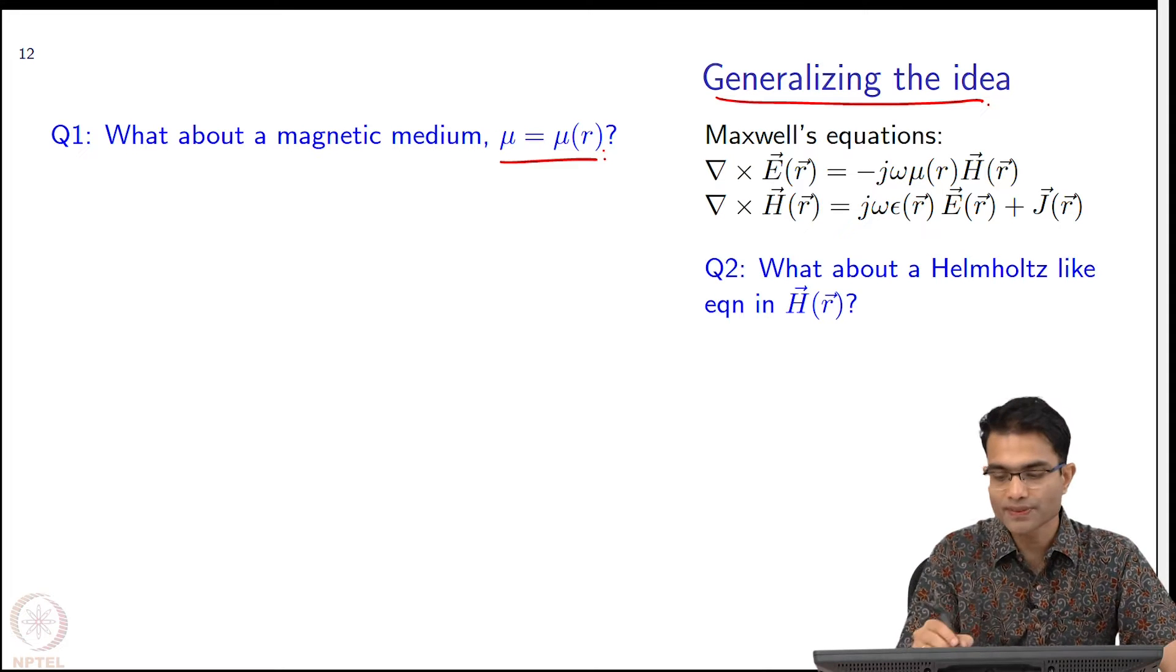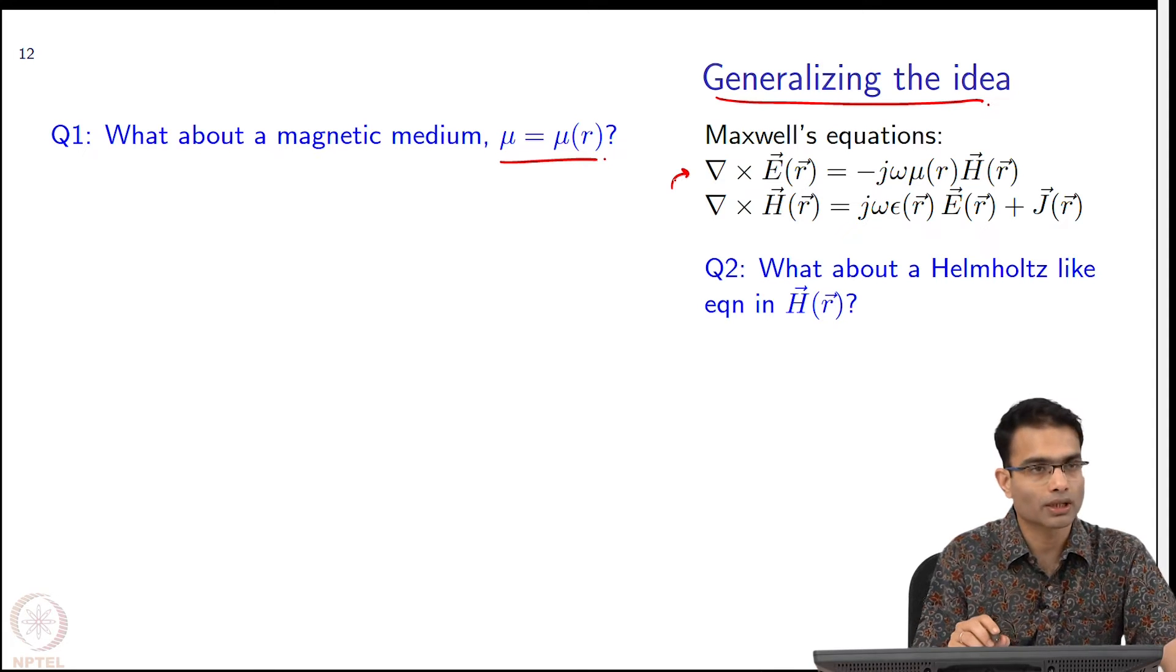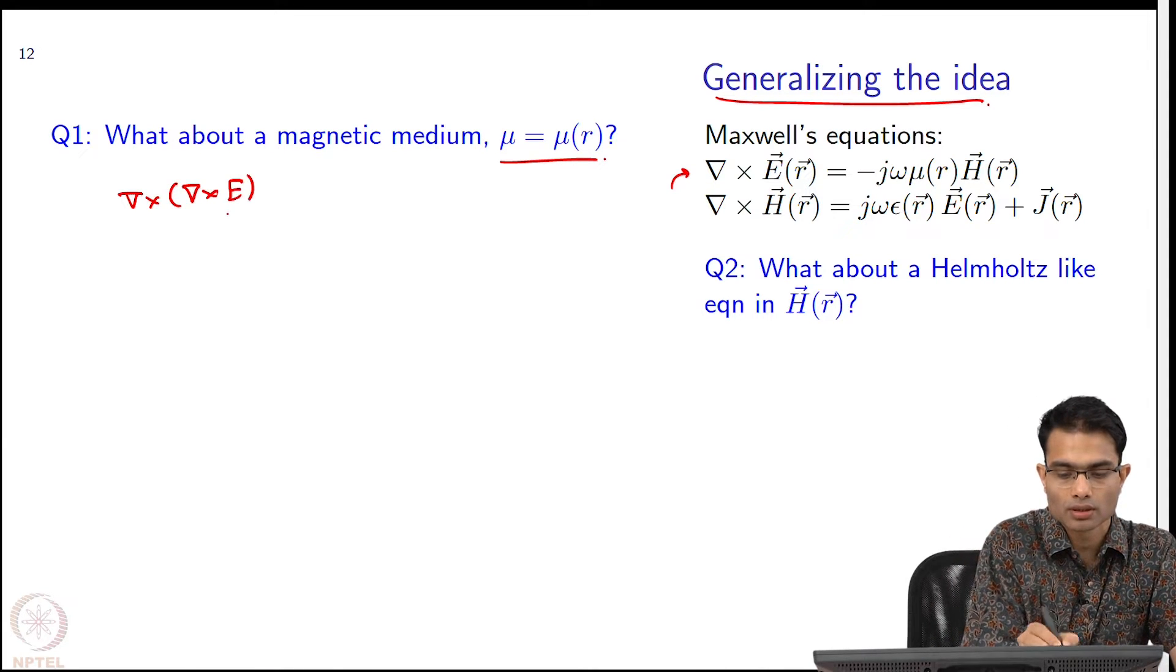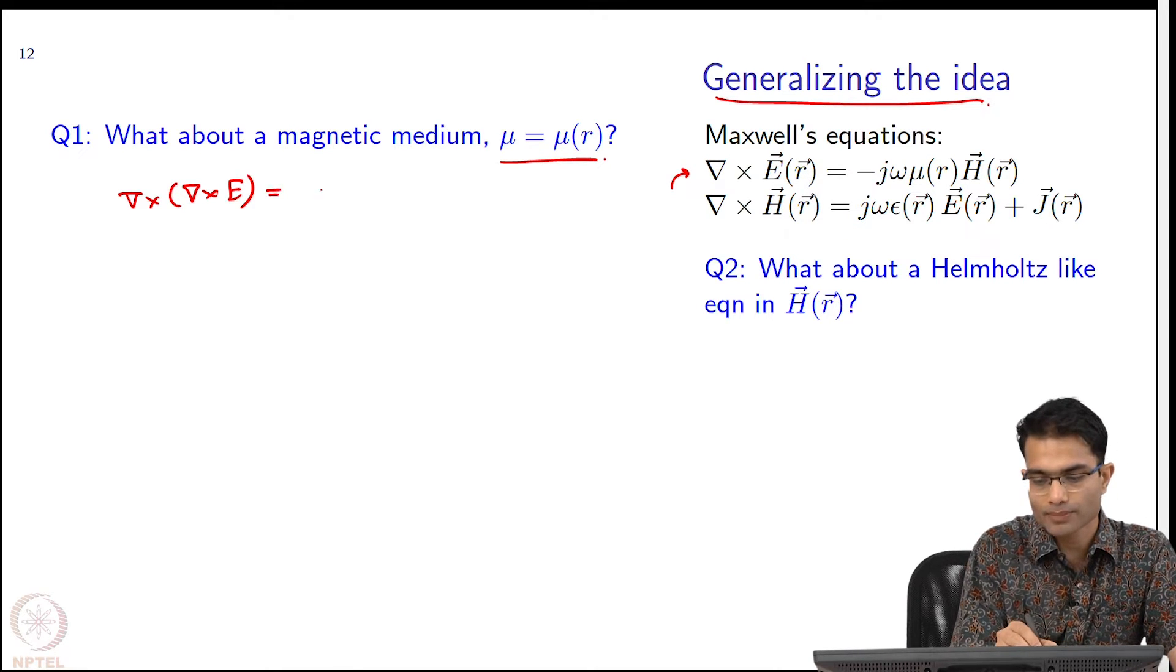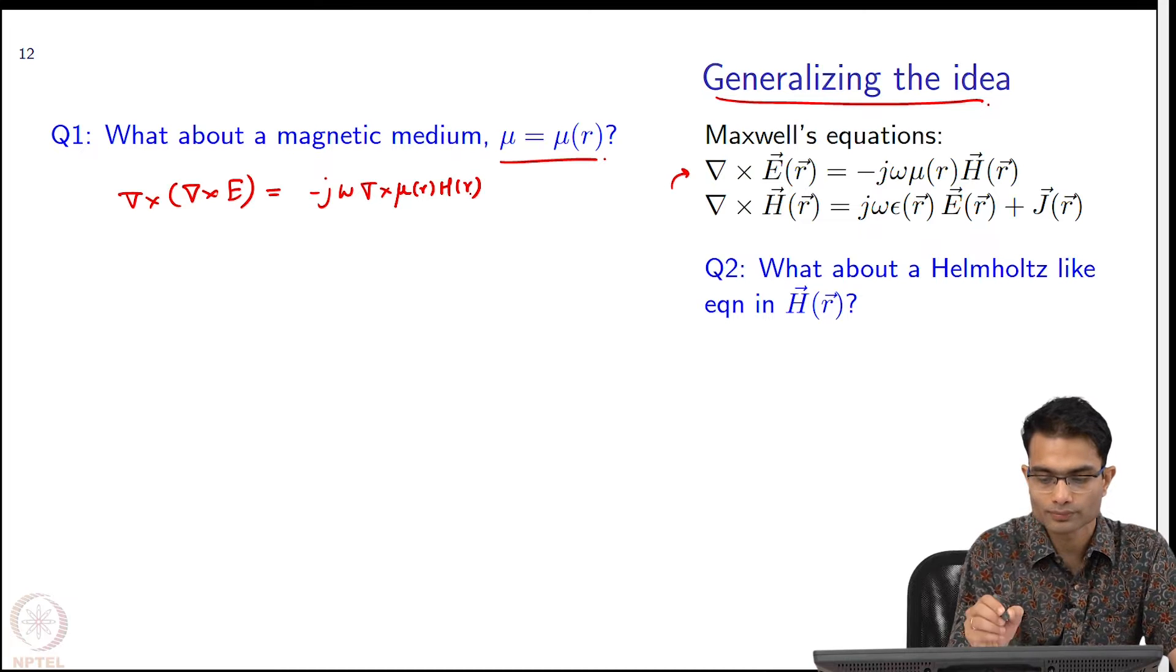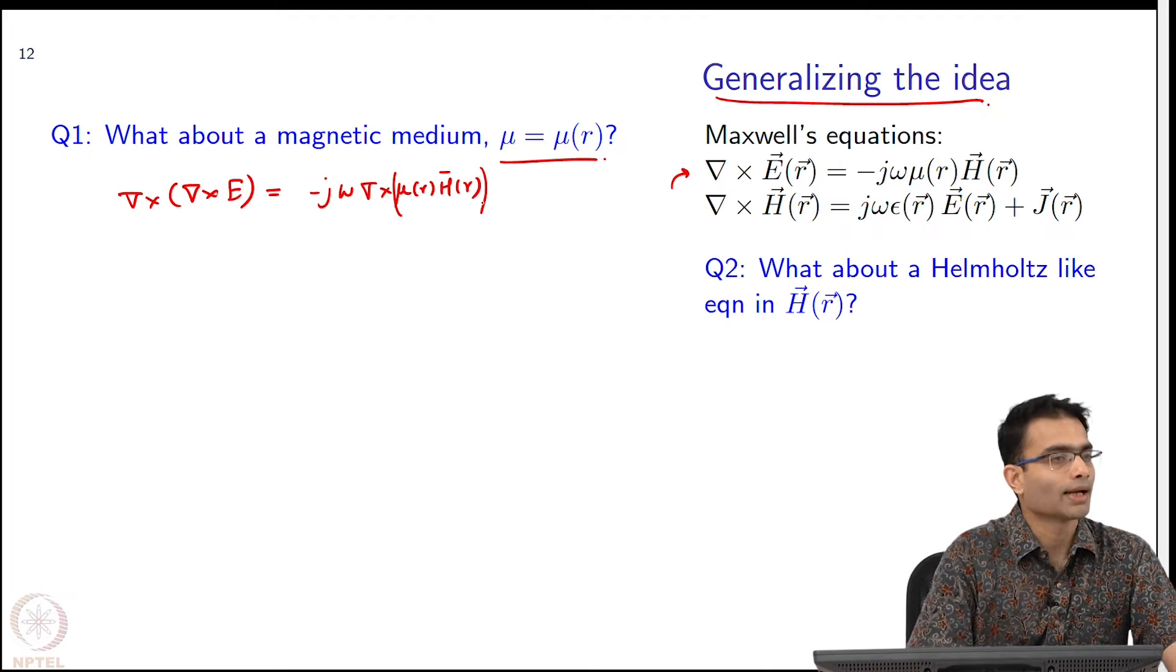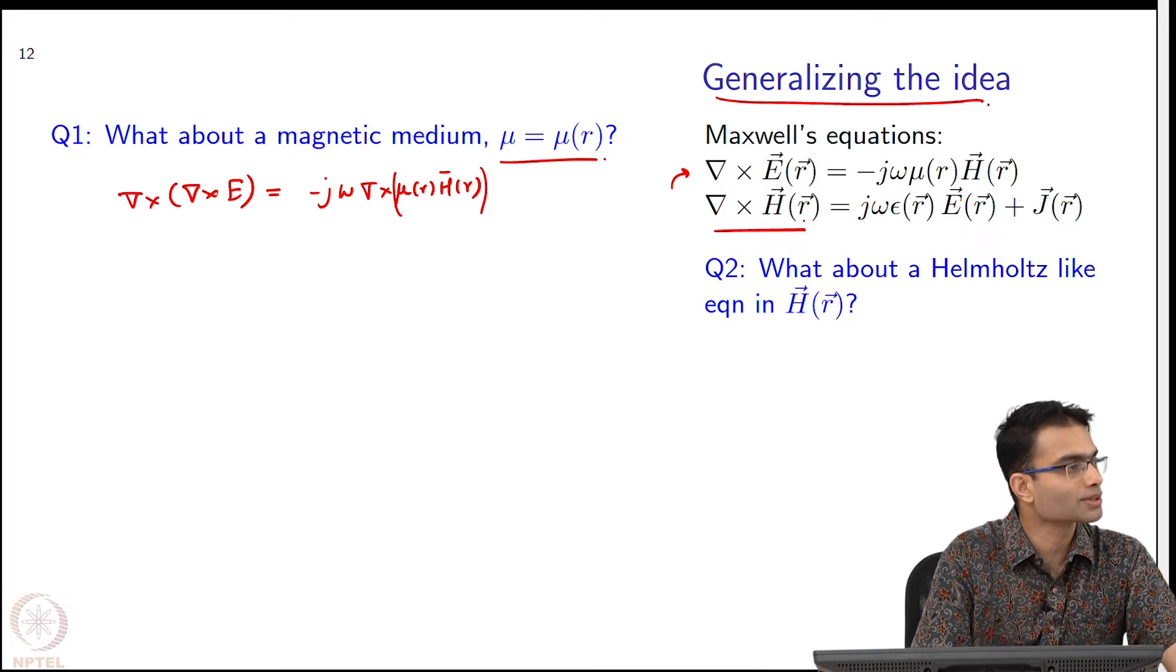So, remember what we did was we took this first equation and what did we do to it? Curl. We took curl right. So, we did del cross del cross E and that gave us j omega mu, sorry, del cross mu r H r and that is a problem right because I know del cross H, I do not know del cross mu H.